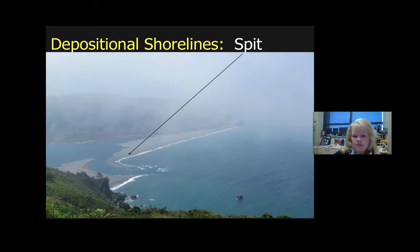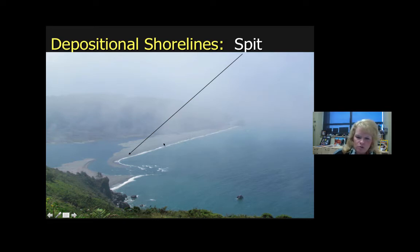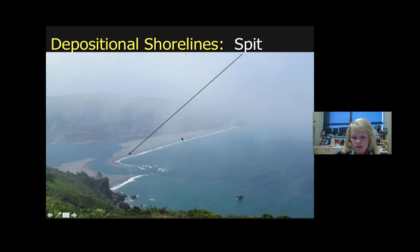This is a spit I saw while traveling from Redwood National Forest up into Oregon. It was a foggy morning, but you can see where deposition has occurred from longshore currents and we've almost got a full bay barrier situation, but it hasn't grown all the way across. Until it grows completely across you have a bay barrier, but this is a classic spit.